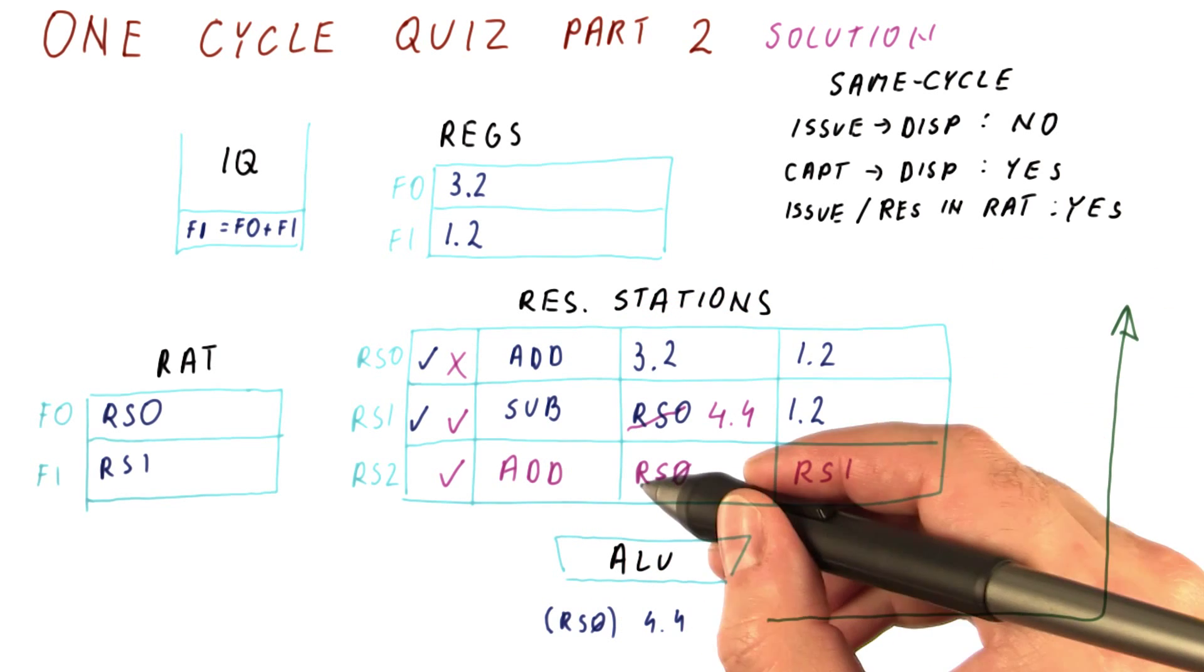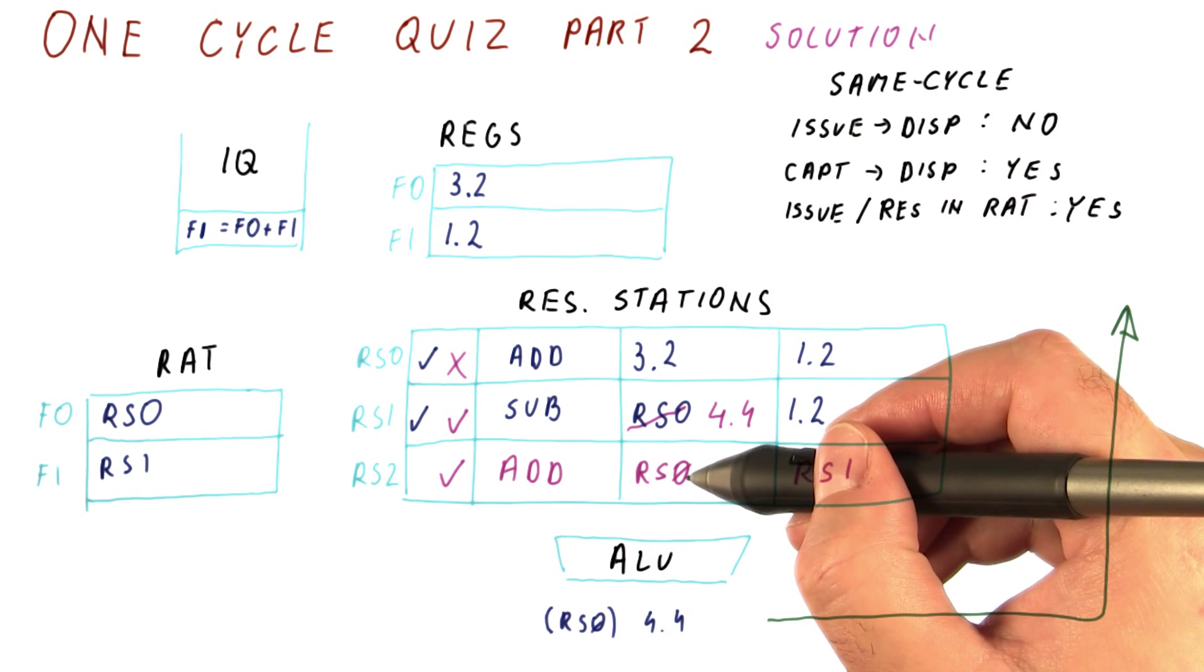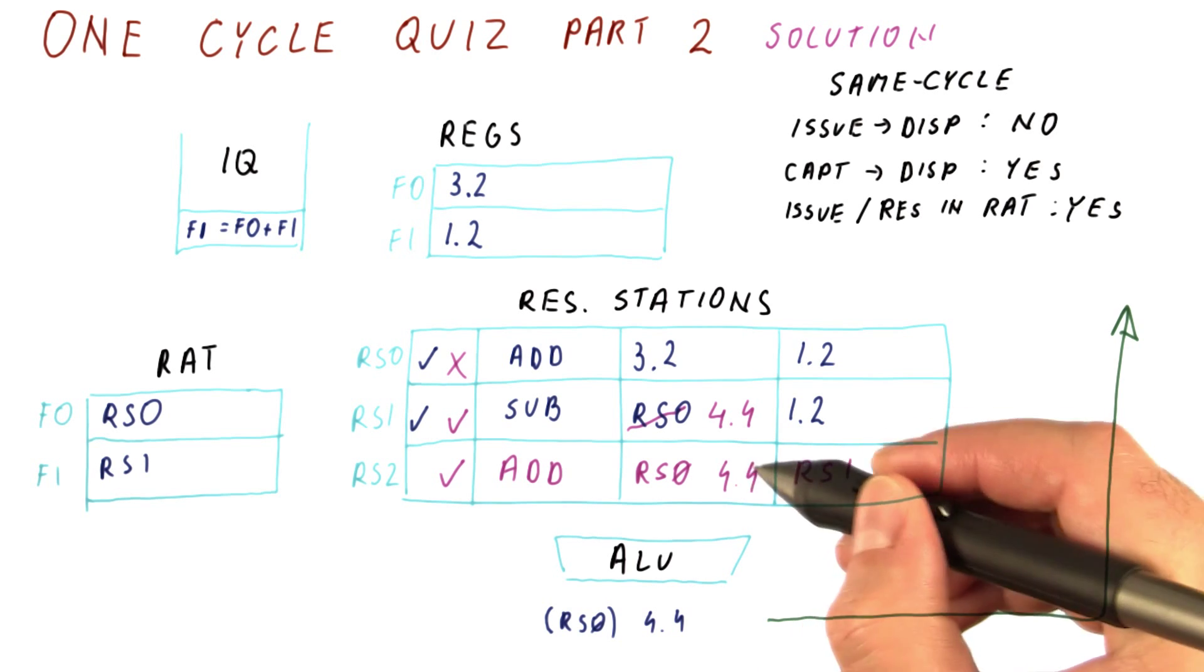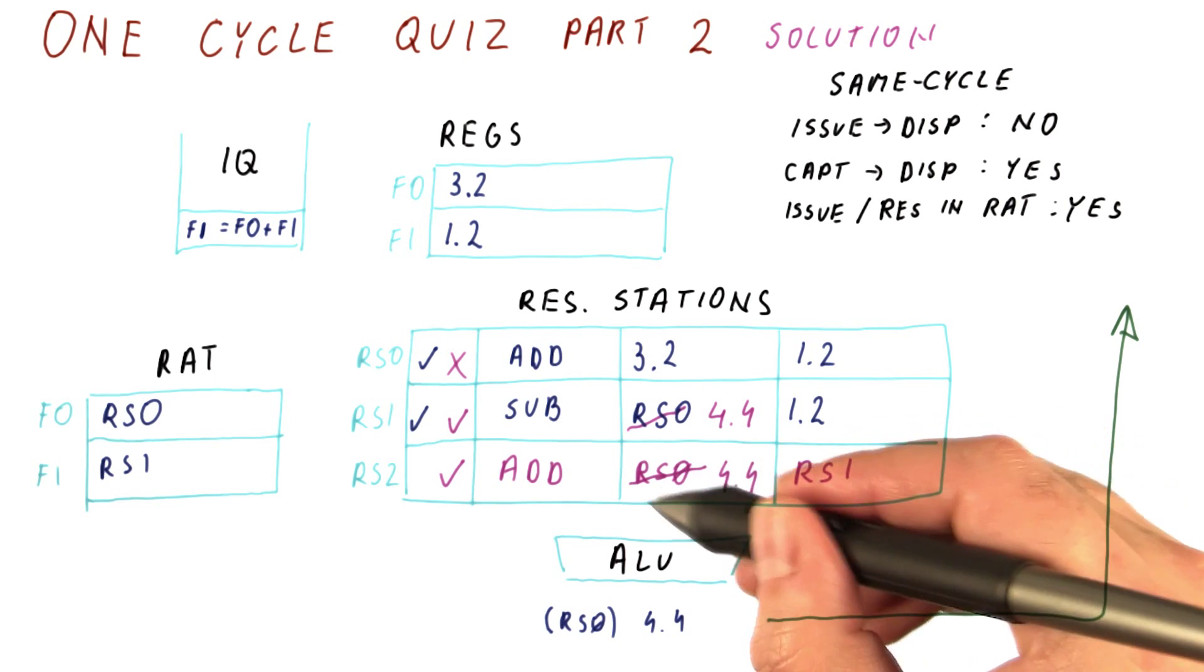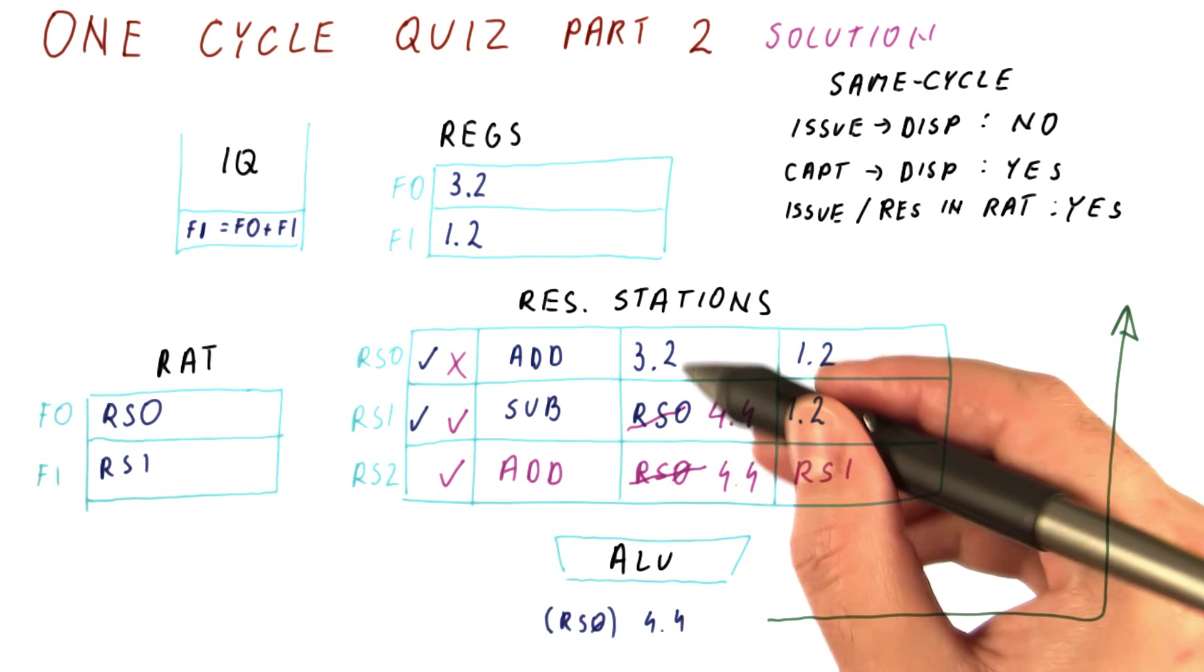And then this one that we just put in a reservation station needs to capture the 4.4, otherwise things are not going to go well. So this needs to happen in the same cycle. The processor won't work well if we left it at RS0, because RS0 is never going to broadcast anything.